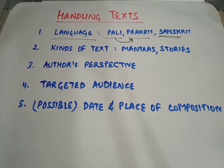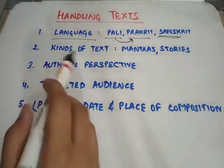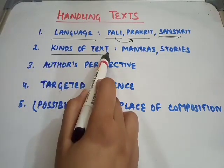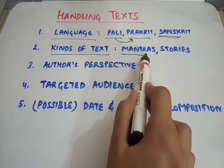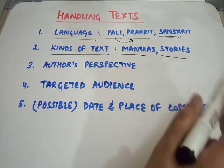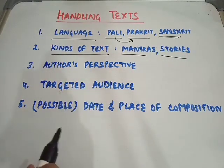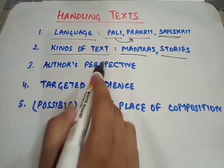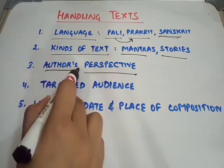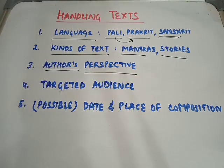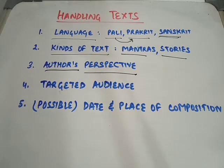The second element considered is the kind of text — does it contain mantras, or stories, and so on. The third thing taken into consideration is the perspective of the author — from what angle did the author write it, and what idea is the author trying to convey through the text? This is extremely difficult to understand, so historians usually use corroborative materials.